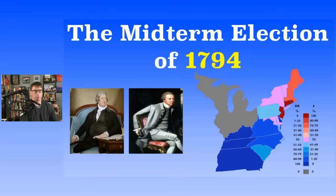This would be the Fourth Congress. On the right is Ralph Izzard, the president pro tempore at the time. On the left, you still have Frederick Muhlenberg — but he used to be pro-administration; now he is a member of the Democratic-Republican party.